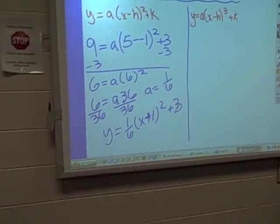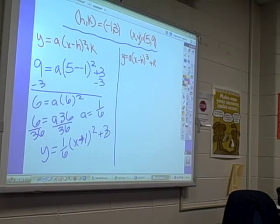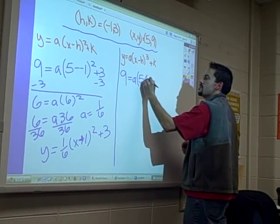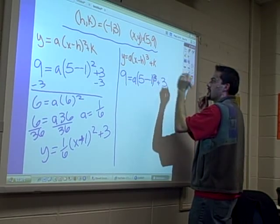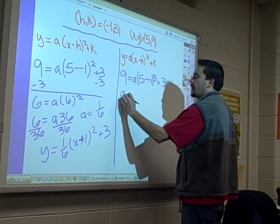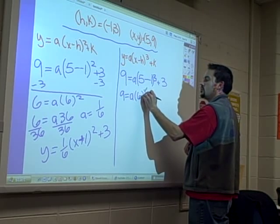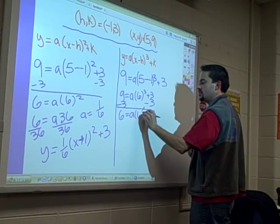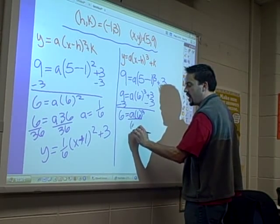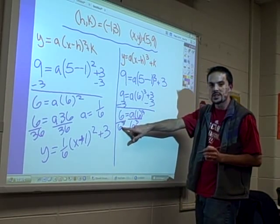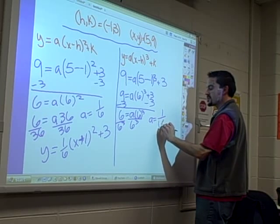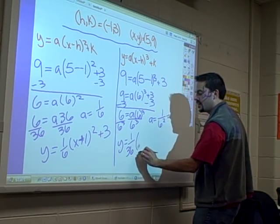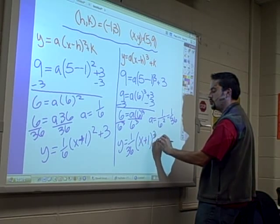So I'm going to go through the same exact process for the cubed. And you'll see that this process, it's going to get old pretty quick. Nine equals a times five minus negative one squared plus three. I'm sorry, not squared, cubed this time, because we're working on the cubic. Nine equals a times six cubed plus three. Subtract three. Six equals a times six cubed. Now, I don't have my calculator, so I'm going to leave it as cubed. But when I divide off that six cubed, I've got a six to the first power over six cubed. A is going to leave me with one over six squared, which is one over 36. So my equation is now one thirty-sixth of x plus one cubed plus three.